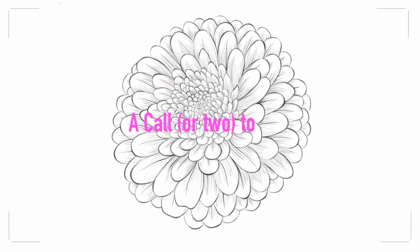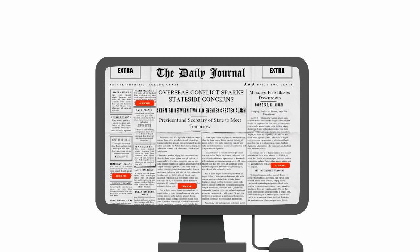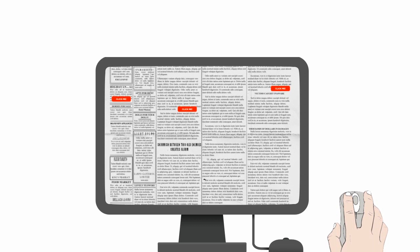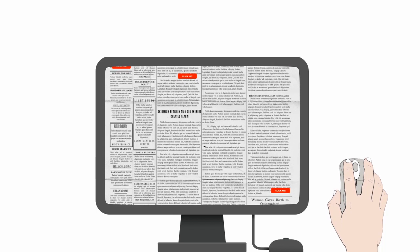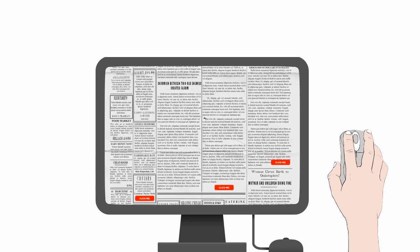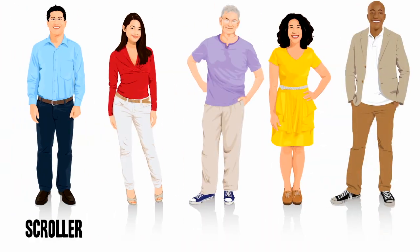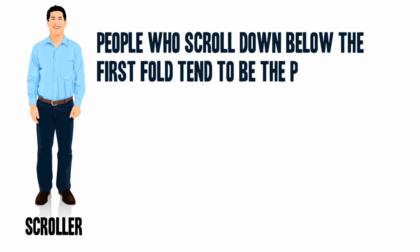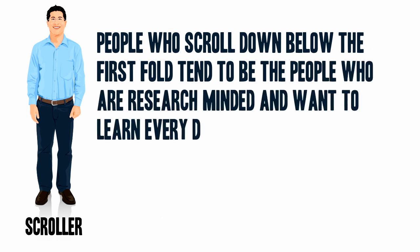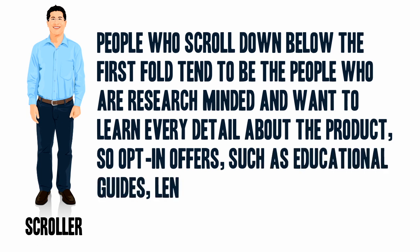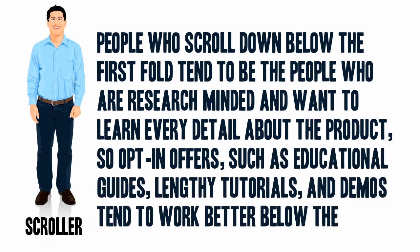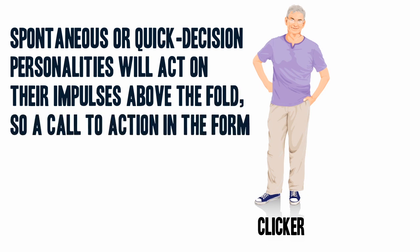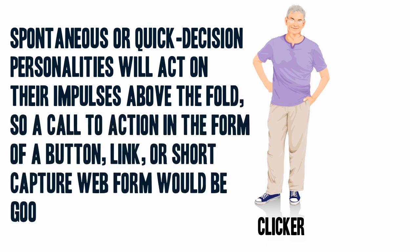A call to action. Turning back to the fold, one way to optimize above and below might be adding a call to action for each part. This can increase conversions by making our offer once per screen, instead of only once for the entire page. Not only does adding a call to action on each screen give people more opportunities to convert, but it also gives the opportunity to target different types of people. People who scroll below the first fold tend to be research-minded — opt-in offers such as educational guides, tutorials, and demos work better there. Spontaneous personalities will act above the fold, so a button, link, or short capture web form works well there.